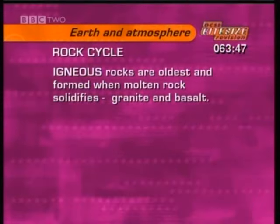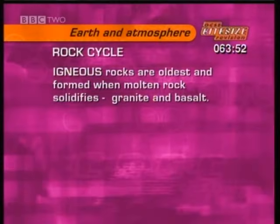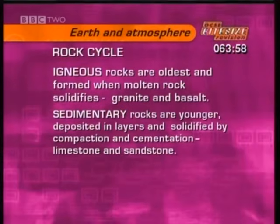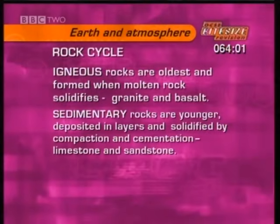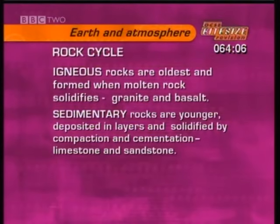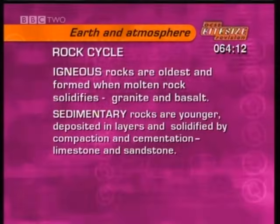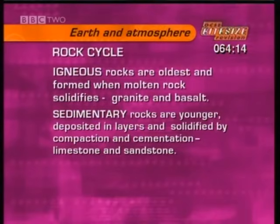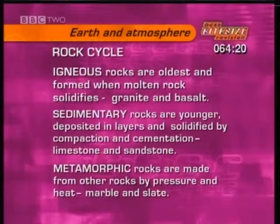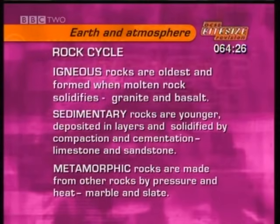Igneous rocks are the oldest rocks on the Earth — first formed when the molten Earth began to cool down and solidify. Examples of igneous rocks are granite and basalt. Sedimentary rocks are younger, deposited in layers made from eroded particles of igneous rock and other material, changed into solid rock by pressure and heat. Examples are limestone and sandstone. Metamorphic rocks are made from other rocks by great pressure and heat. Examples are marble and slate.